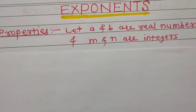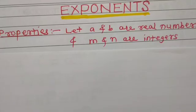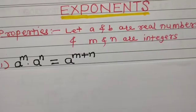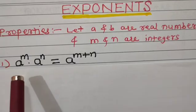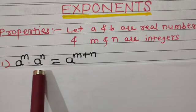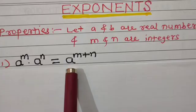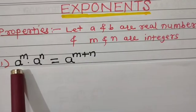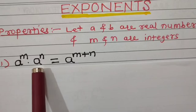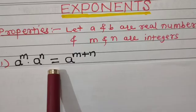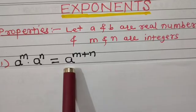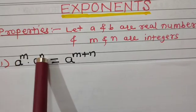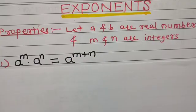Let a and b be real numbers and m and n be integers. Property number 1: a to the power m multiplied by a to the power n is equal to a to the power m plus n. Here a is the base, m is the power for the first term, and n is the power for the second term. This is a product of two numbers, and the result is obtained by keeping the base as it is and summing the powers: a to the power m plus n.